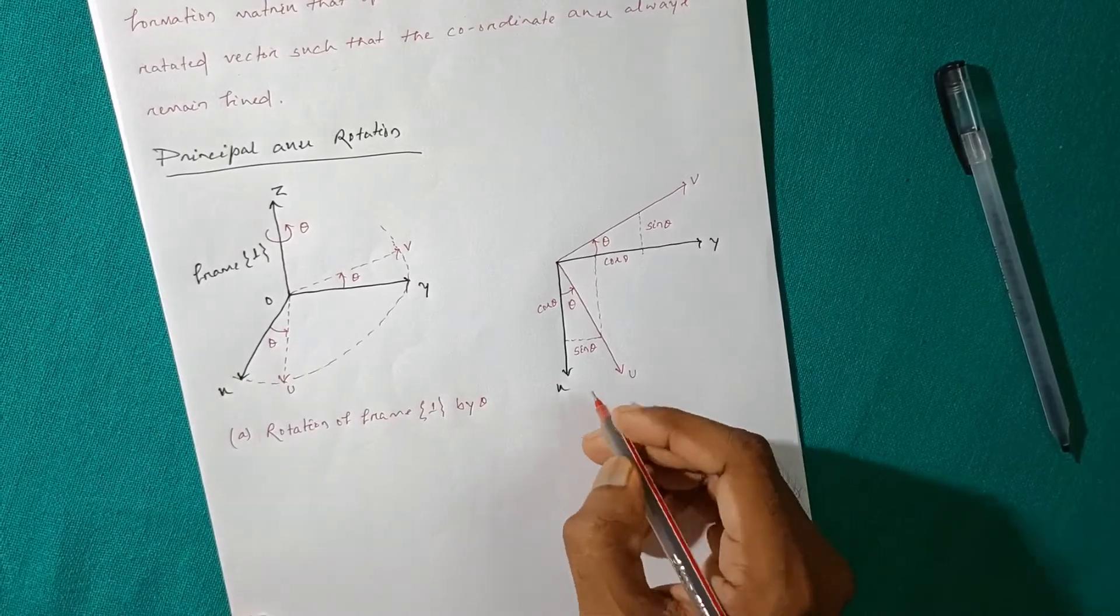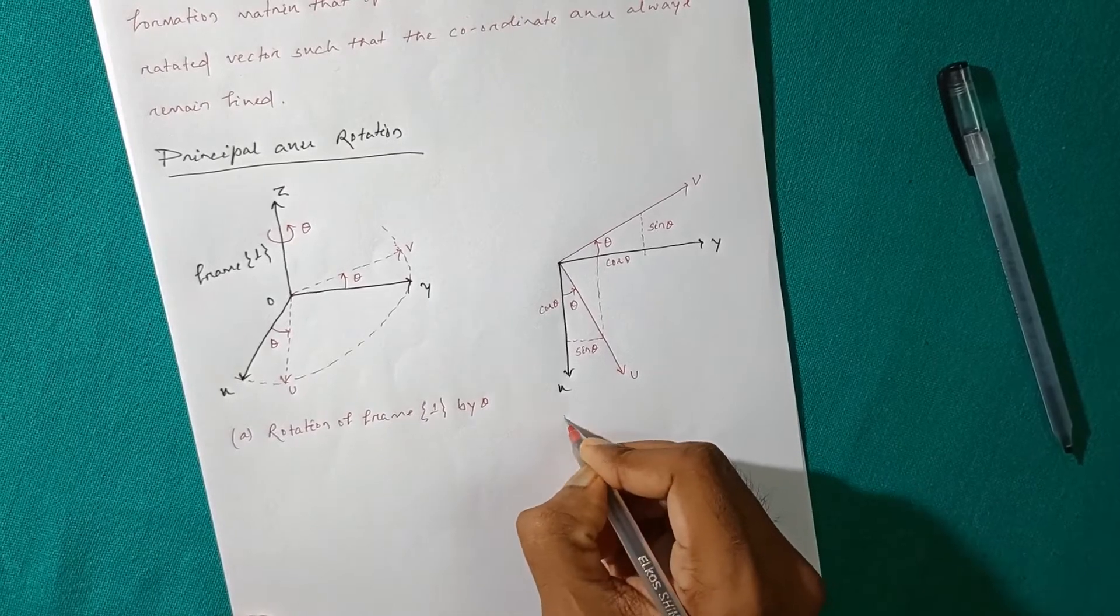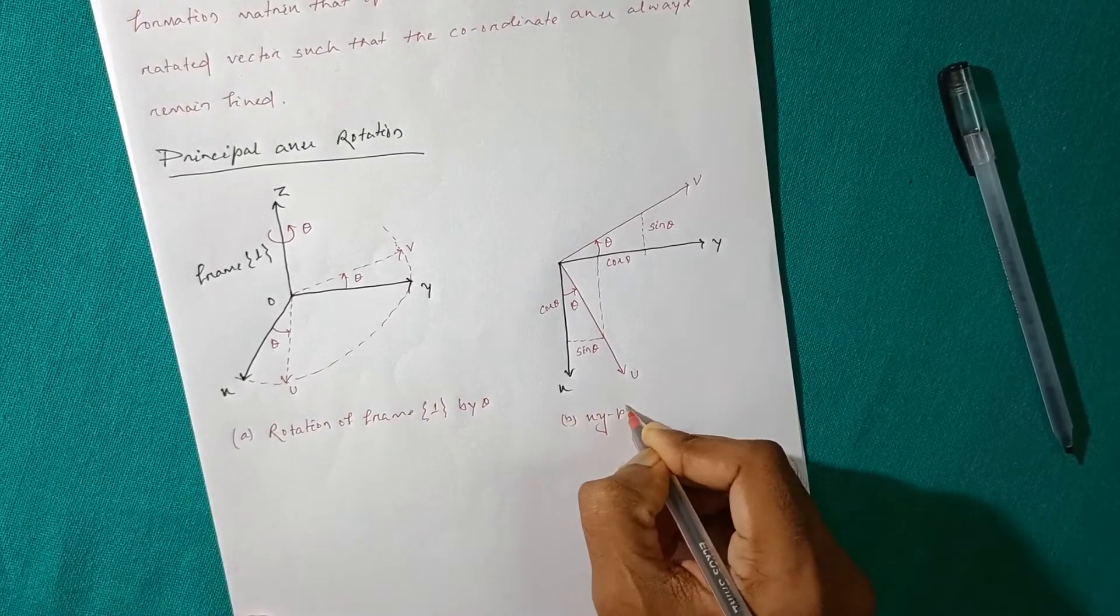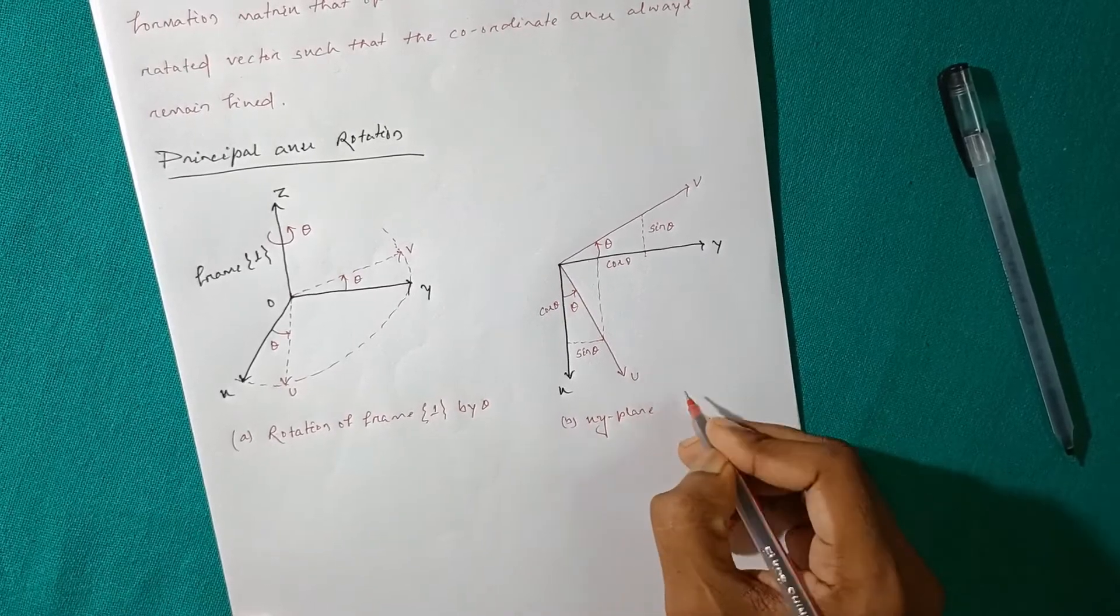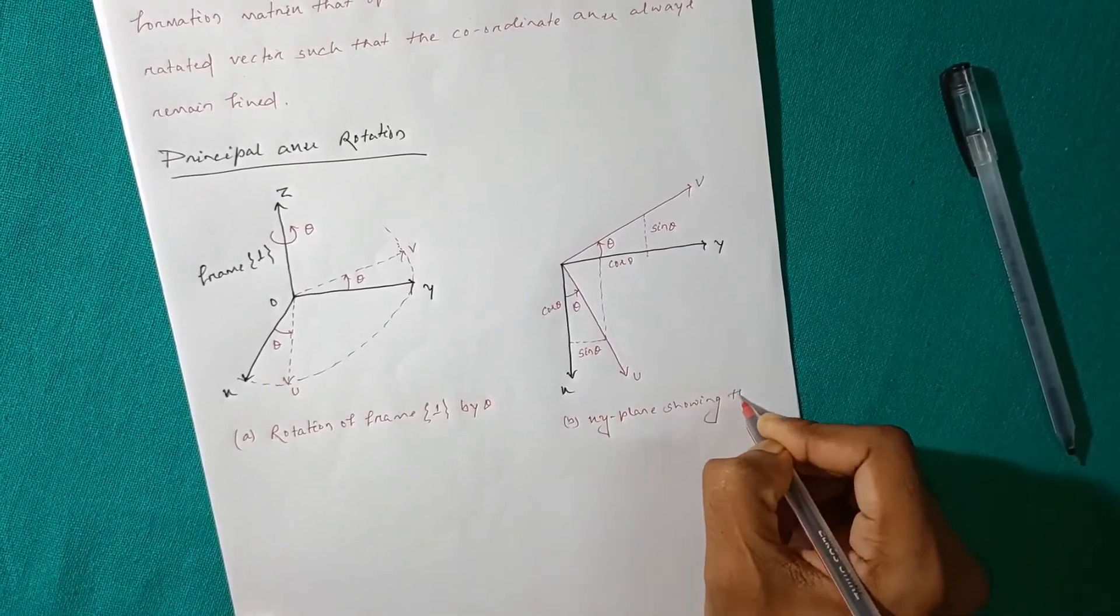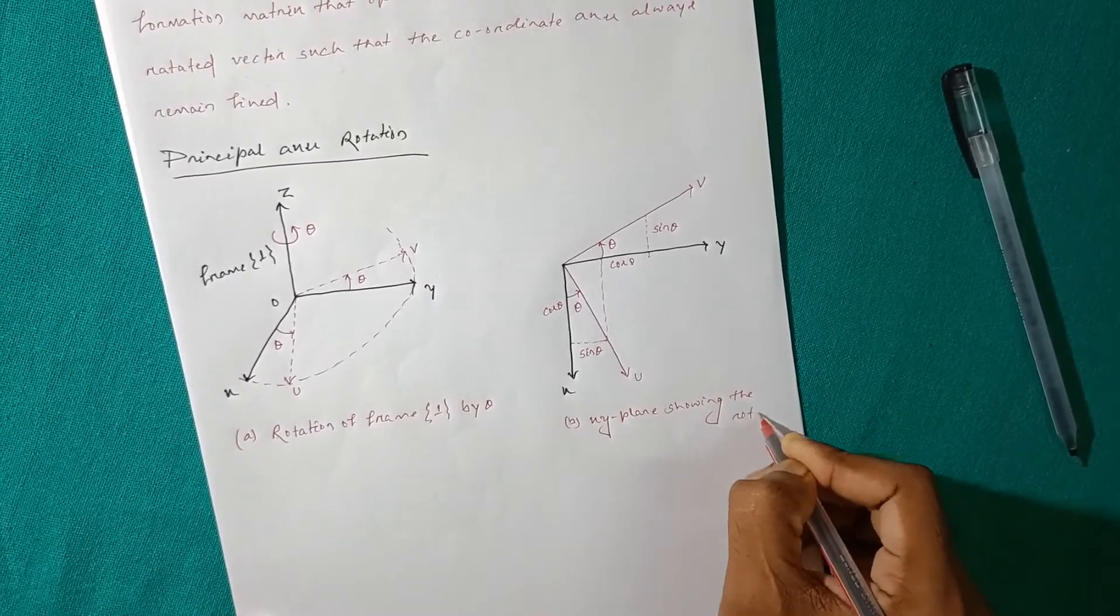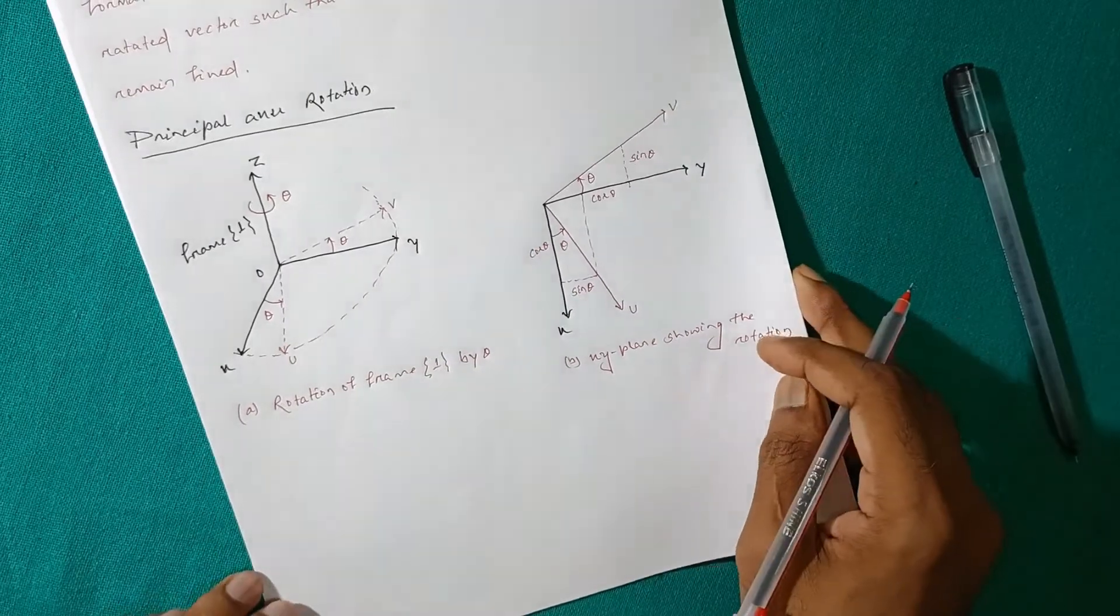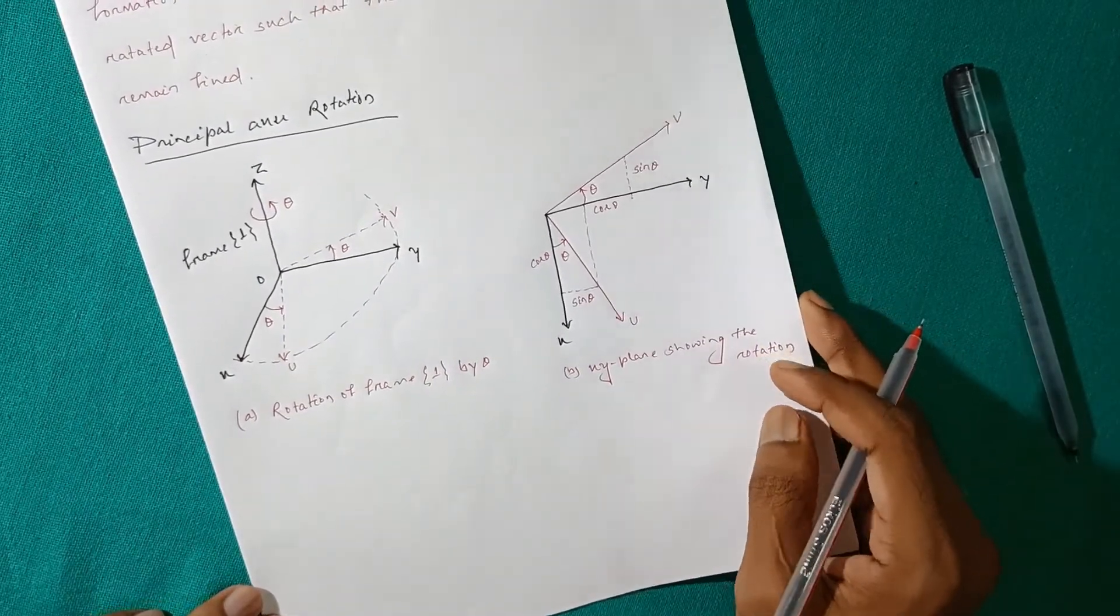So you can find this is cos theta and this is sin theta and here this is cos theta and this is sin theta. This diagram represents the X-Y plane showing the rotation.